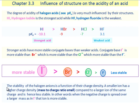The stability of halogen anions is a function of their charge density. A smaller ion has a higher charge density (mass to charge ratio small) compared to a larger ion of the same charge and hence less stable. In other words, when the negative charge is spread over a larger mass as in I-, that ion is more stable.